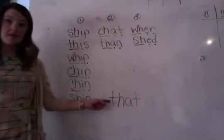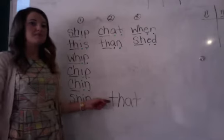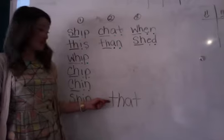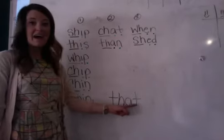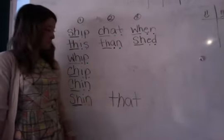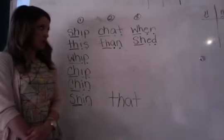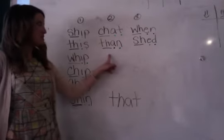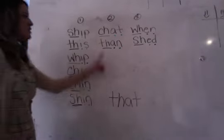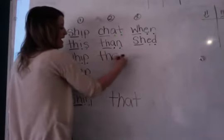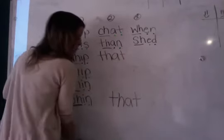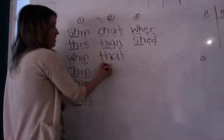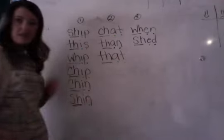This is the word that. Say that. Now let's say the sounds for that: Th, A, T — that. Where does that go? Right — this makes a short A sound, which means it goes under column two. Say and write that under column two: Th, A, T — that. Now let me hear you dot and dash: Th, A, T — that.